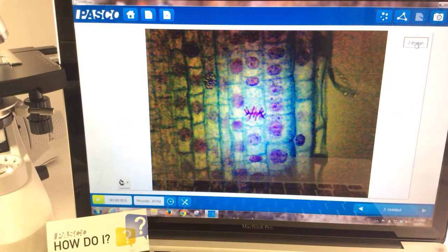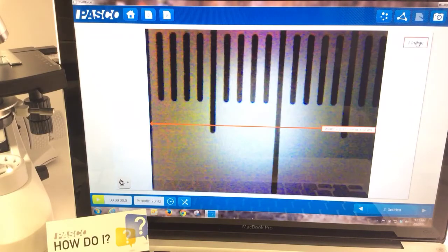Now if I wanted to make a measurement of the length or width of one of these cells, what I first need is a reference. So I also captured an image of a micrometer slide to be able to give me that standard of what the width of my image is.